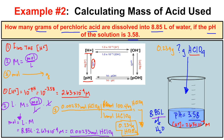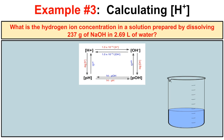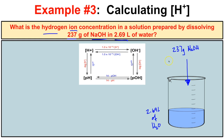In this final example, it asks: what is the hydrogen ion concentration in a solution prepared by dissolving 237 grams of sodium hydroxide in 2.69 liters of water? We have 2.69 liters of H2O, and we're going to dissolve 237 grams of NaOH in it. The question asks us to find the hydrogen ion concentration of this solution.